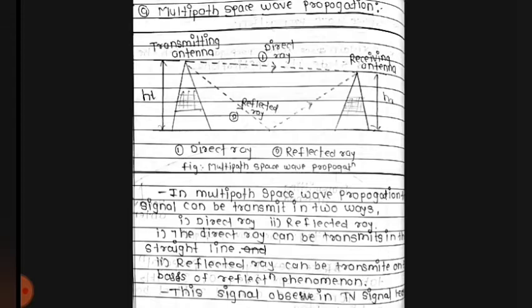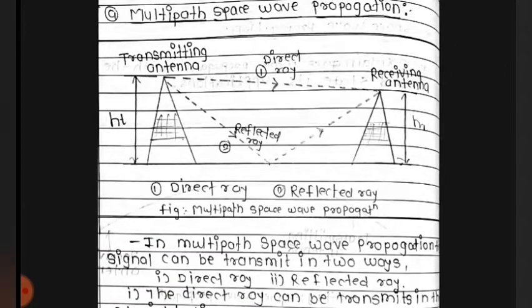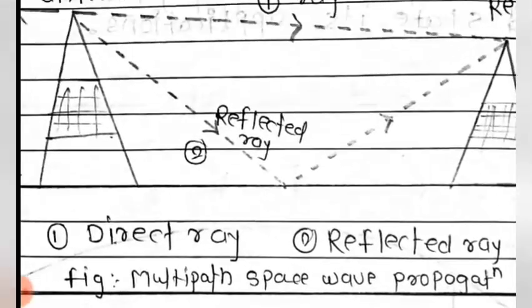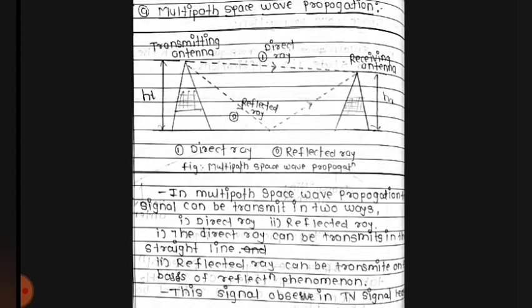The direct ray is transmitted in a straight line, इसलिए उसको direct ray बोलते हैं. The reflected ray is transmitted on the basis of the reflection phenomenon — वो अपनी earth के ऊपर reflect होती है, इसलिए उसको reflected ray बोलते हैं. This signal is observed in TV signals — जो भी हमारे घर पर TV पर signals आते हैं, वो reflected ray की वजह से होती हैं, because of multipath space wave propagation.